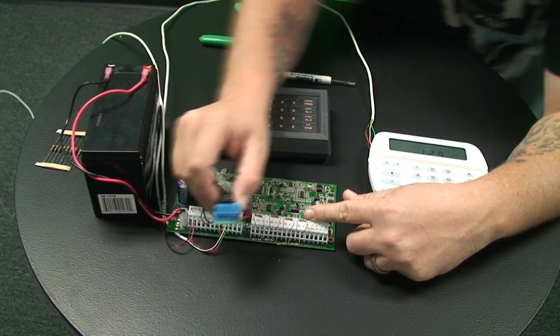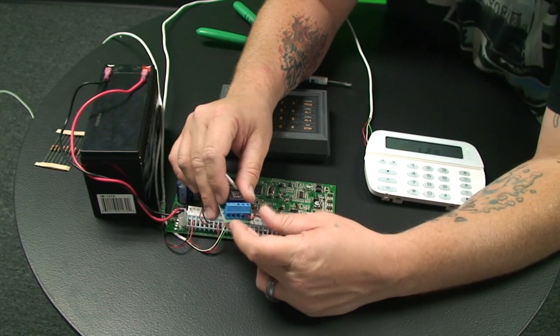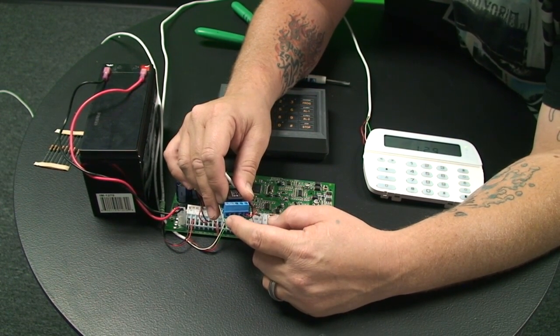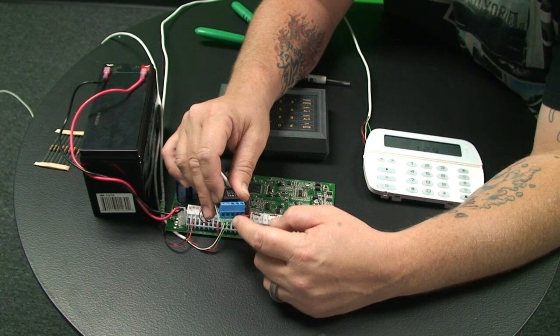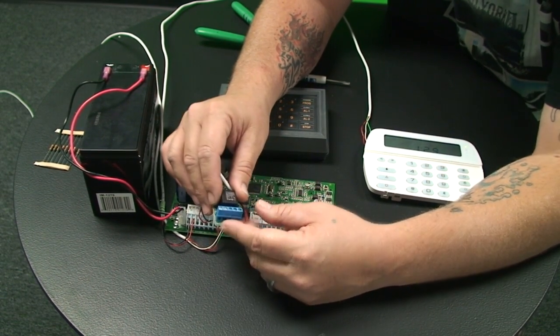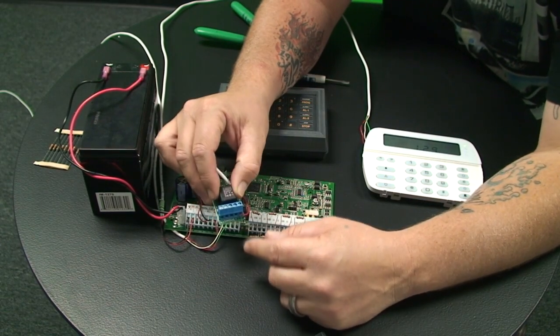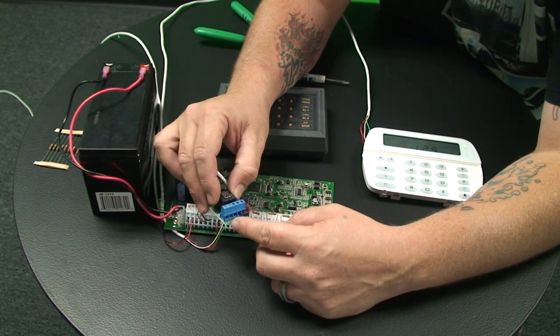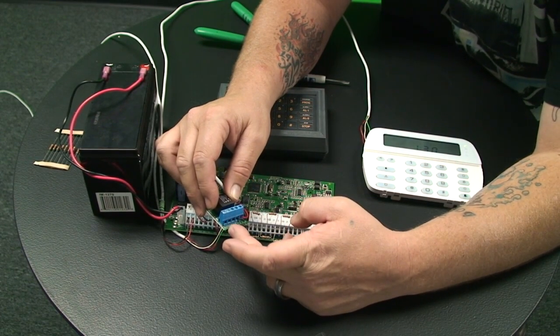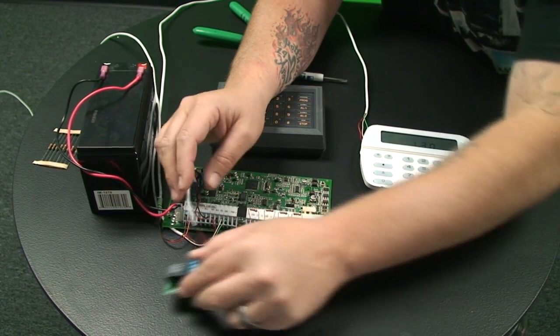So from here, this relay has three more terminals. It has an NO, a COM, and then an NC. The NO means normally open, the NC is normally closed, and the COM is common. So what we're going to do here is this particular dialer likes to have the normally open. It likes to see the closure when it goes into an alarm. So we're going to wire from the normally open and the COM to the inside of this dialer.